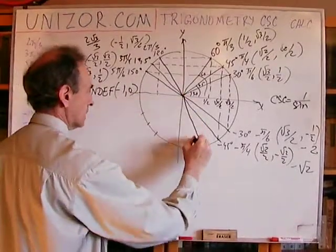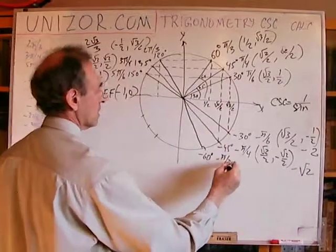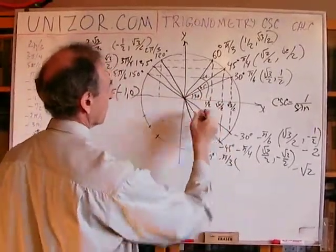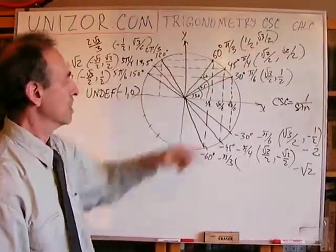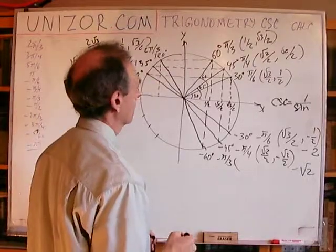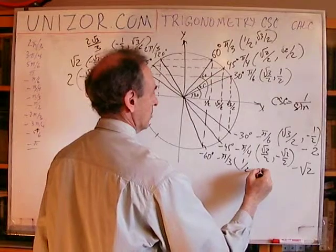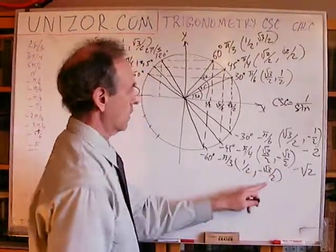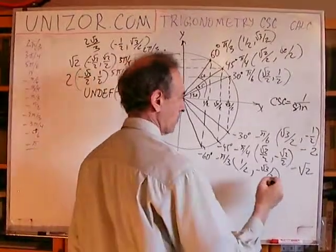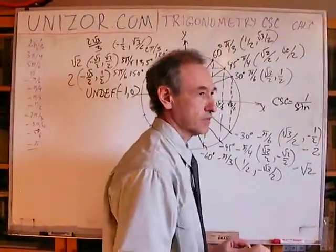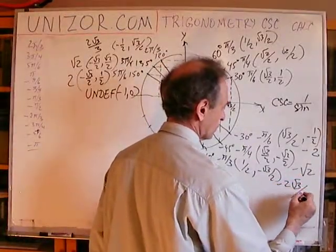Next is minus 60 degrees, which is minus pi over three. The coordinates are symmetrical with plus 60 degrees — I retain the abscissa and change the sign of the ordinate, so it's one-half, minus square root of three over two. Inverting the ordinate gives minus two over square root of three, multiplied by square root of three, which is minus two square root of three divided by three.